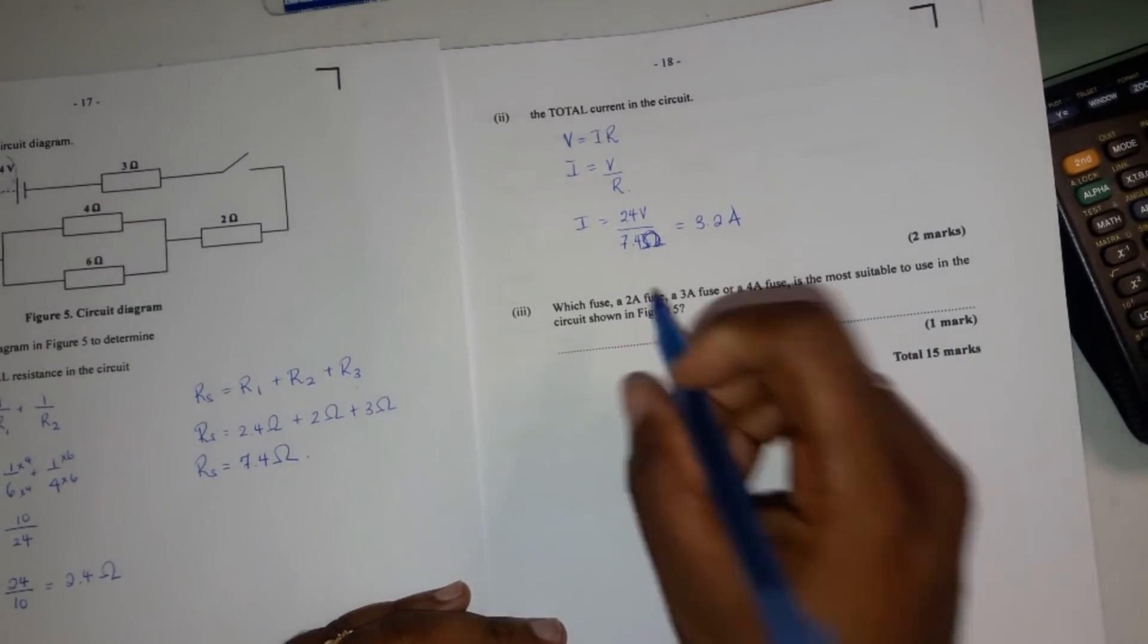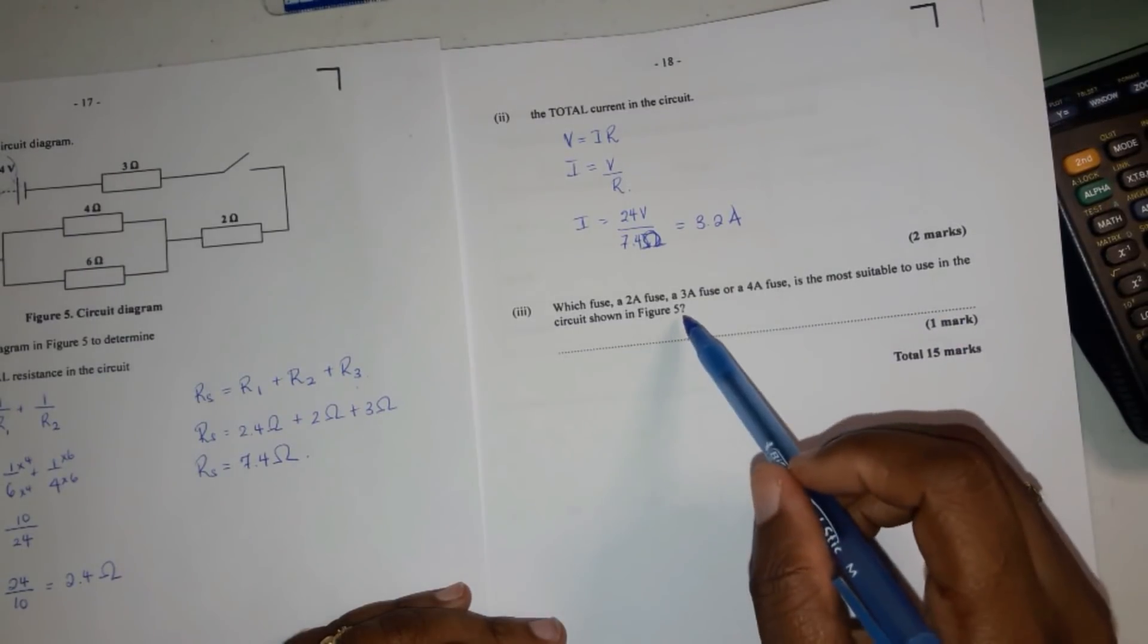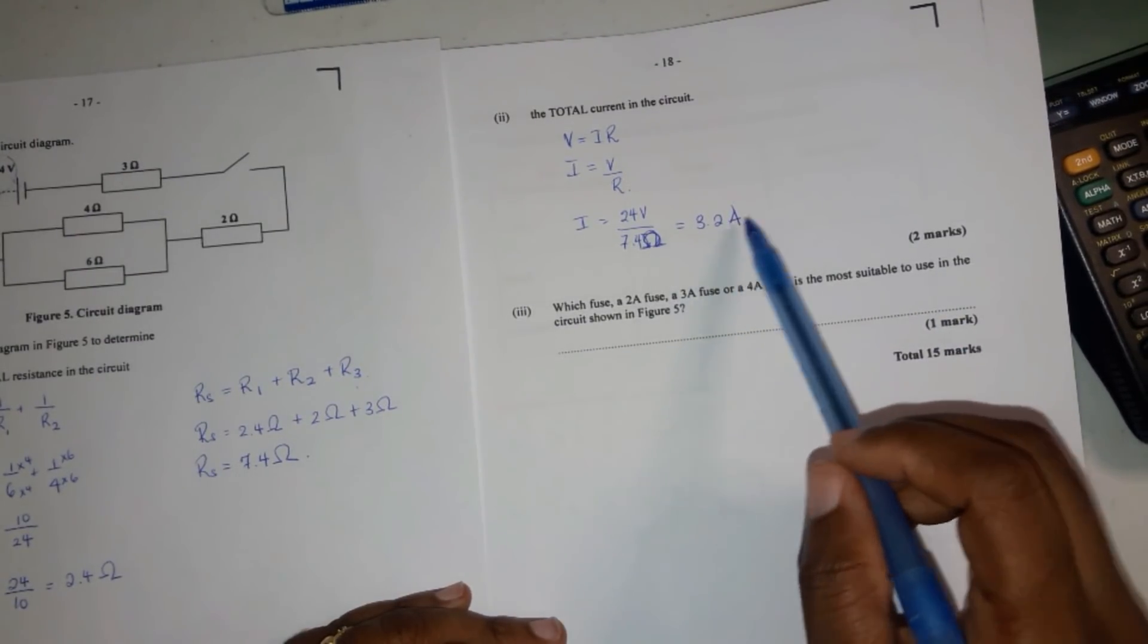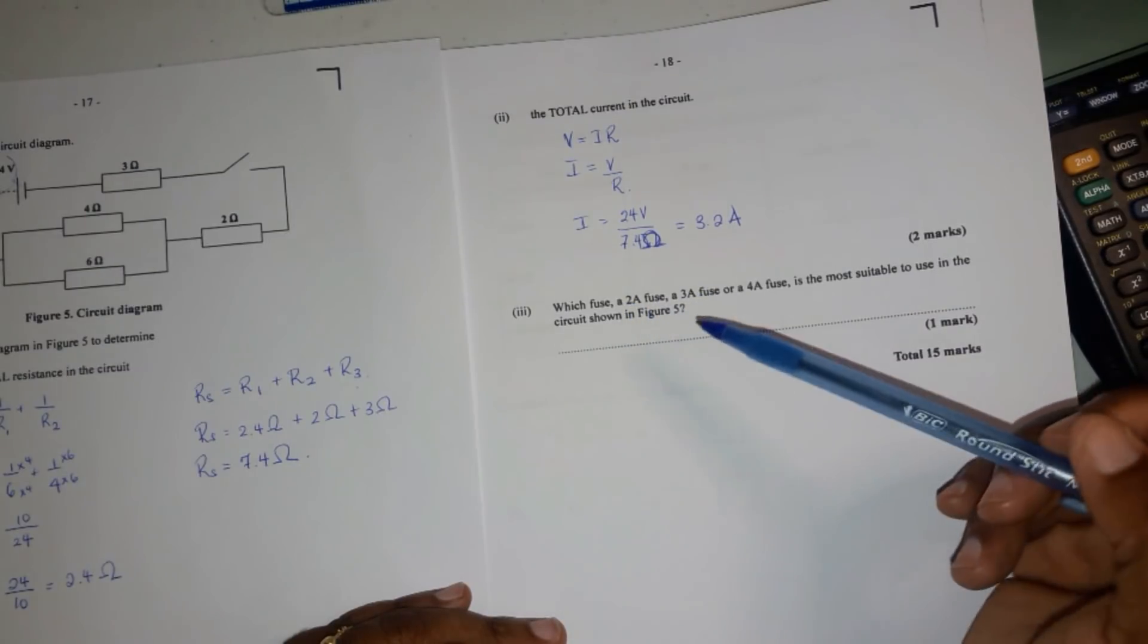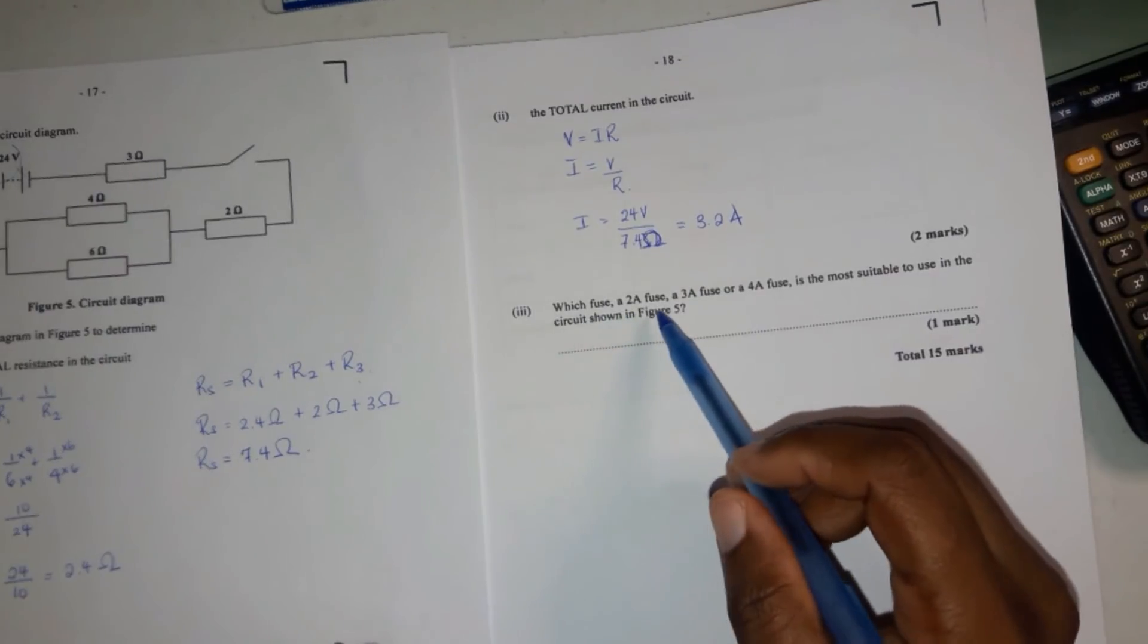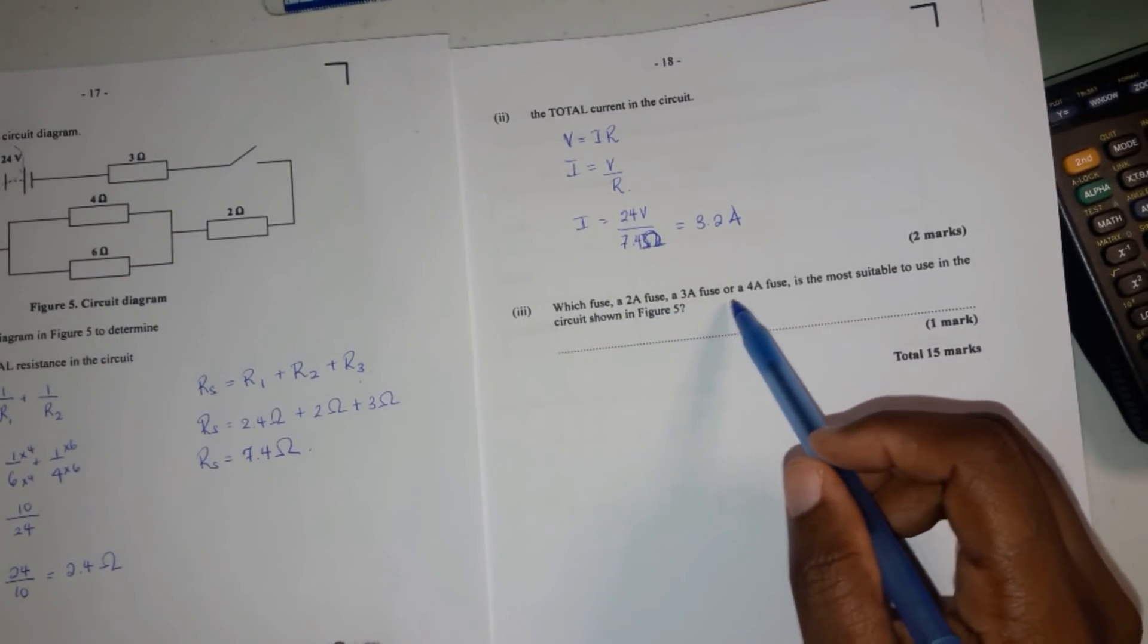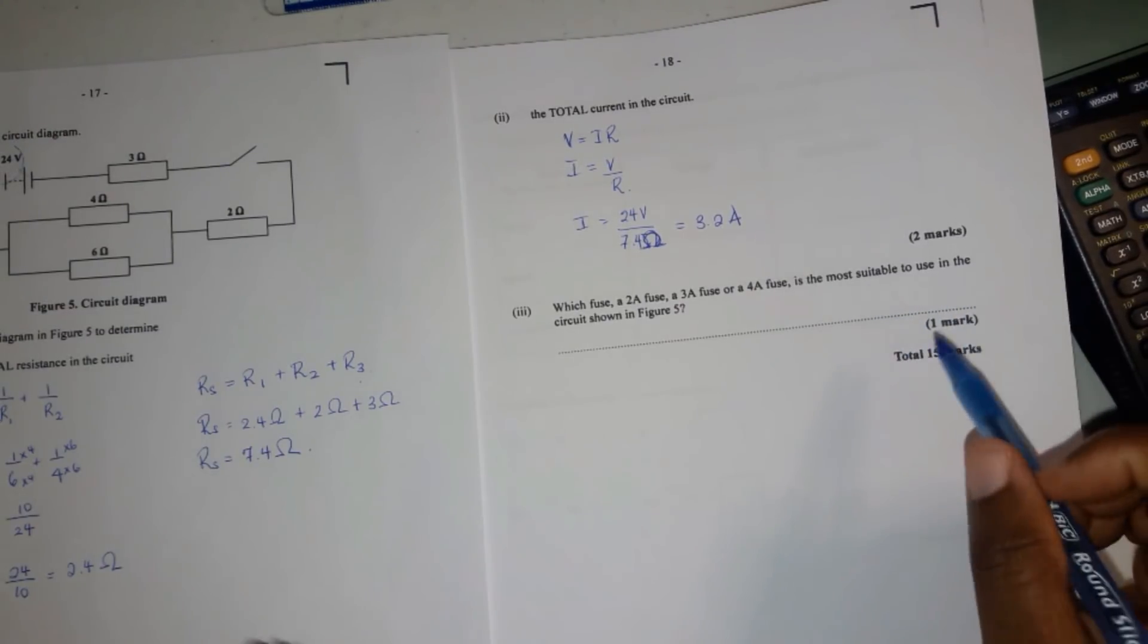And it says, which fuse? A 2A? And this question actually helps you because if you got a really big figure, you would know it doesn't match back to number 3. You would know you were wrong. So it says, which fuse, a 2A fuse, a 3A fuse, or a 4A fuse, is the most suitable to use in the circuit shown below?